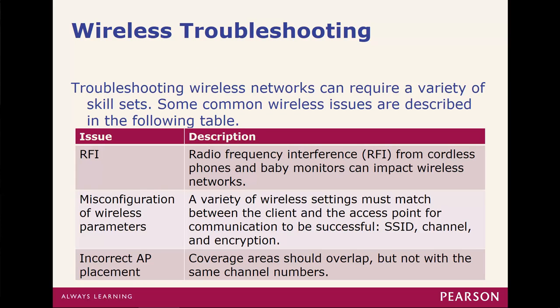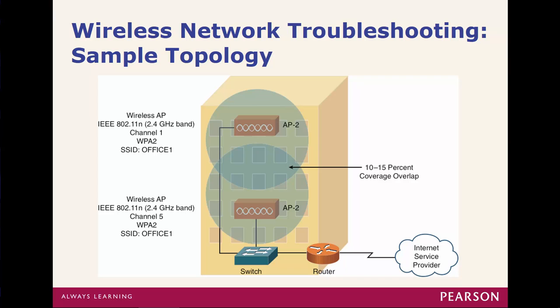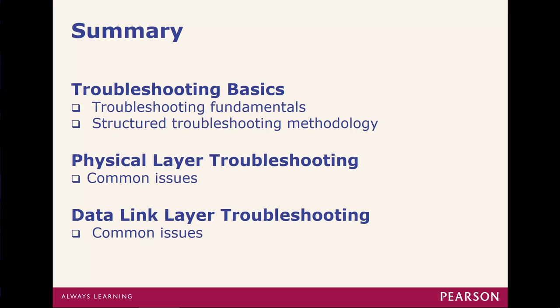Moving into wireless technology: with wireless it could be channel issues, interference, or misconfiguration or misplacement of access points — that's a very big one. Sometimes you may configure one access point with one SSID and an adjoining access point with a different SSID when they should be the same, assuming a converged network. Maybe access points are placed too close together or too far away. You're looking for some overlap — not a whole lot, but some overlap — on different channels. Remember the non-overlapping channels are 1, 6, and 11. Those are the basic fundamentals for troubleshooting common issues in the first three layers.